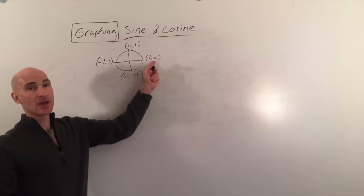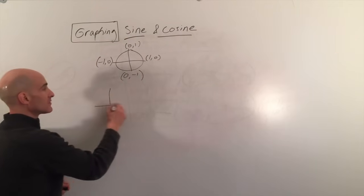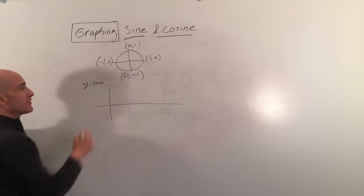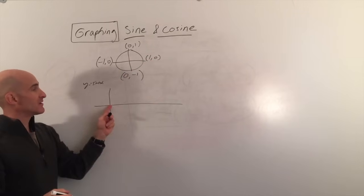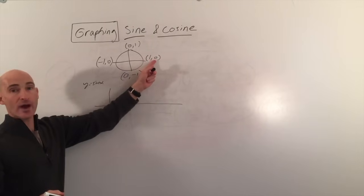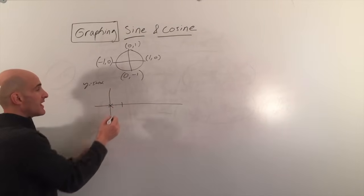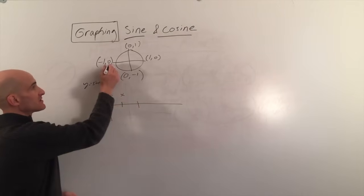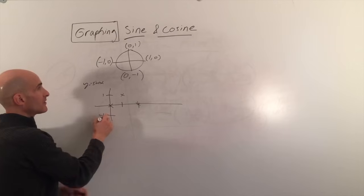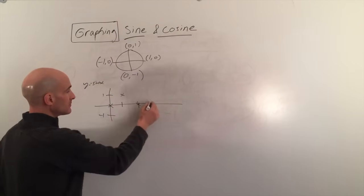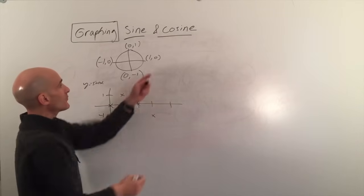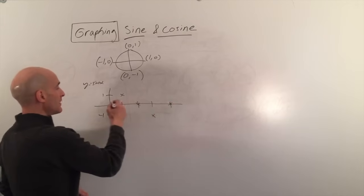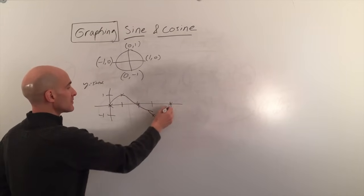So let's graph sine first. We're going to graph these points. If we graph y equals sine x: at 0 degrees, sine is the y-coordinate, that's 0. At 90 degrees, sine is 1. At 180 degrees, sine is back down to 0. At 270 degrees, sine is negative 1. And at 360 degrees we've made one revolution, and we're back to 0. And that's how we get our sine graph.